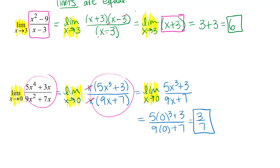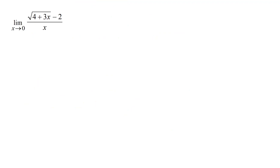We have one more example and it has some important algebra that you might not have seen before. This example looks similar to the other two except there's a radical in the numerator, which makes the algebra trickier. Again, you should recognize you cannot substitute x equals 0 because that would make the denominator zero.